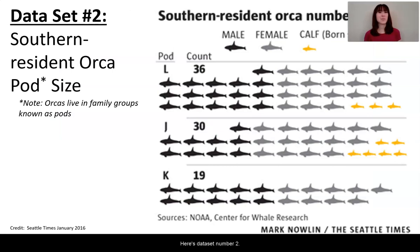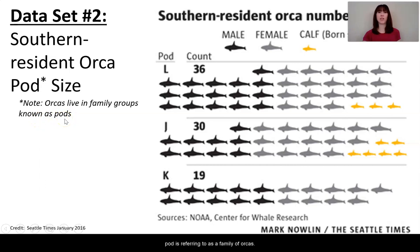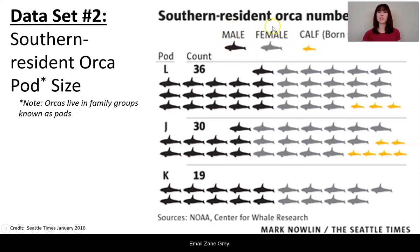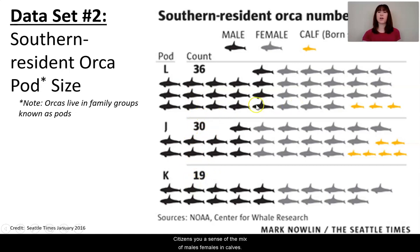Here's data set number two, showing the southern resident orca pod size. Orcas live in family groups called pods in Puget Sound — these are specifically the southern residents, meaning the orca whales that live in Puget Sound. The key shows males in black, females in gray, and calves in yellow. You can see three different pods: L, J, and K — with L being the largest at 36 whales, J having 30 whales, and K having 19 whales. This gives you a sense of the mix of males, females, and calves in the three different pods.